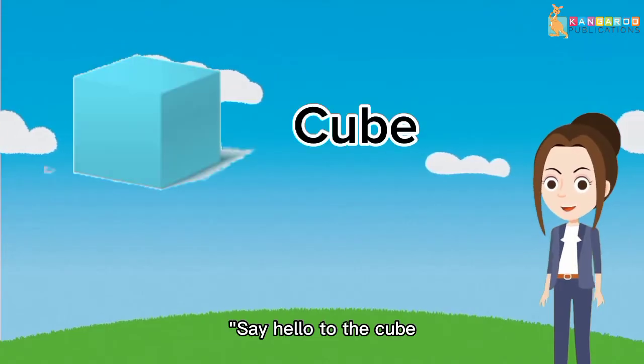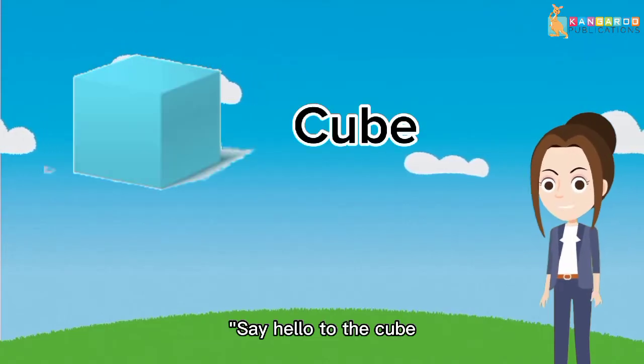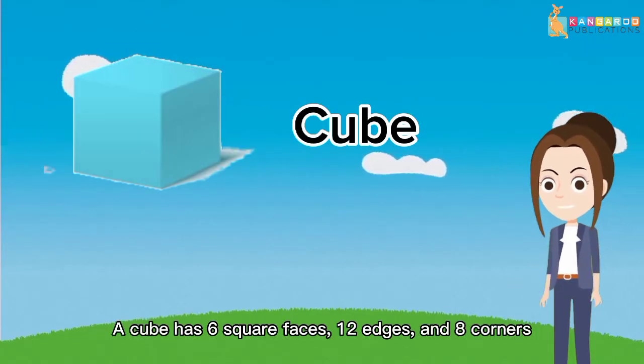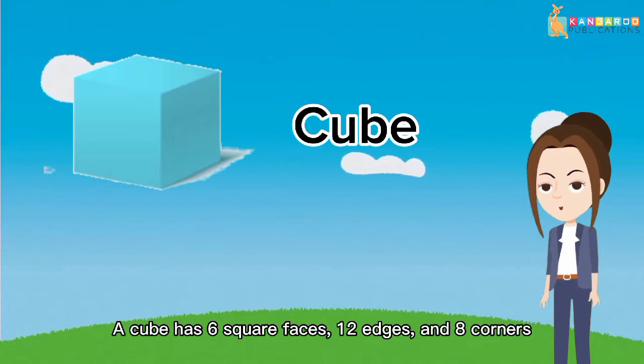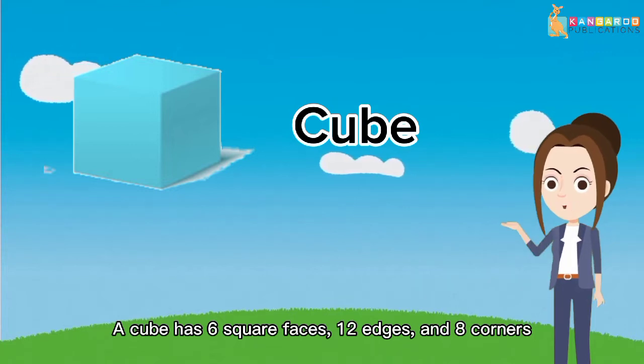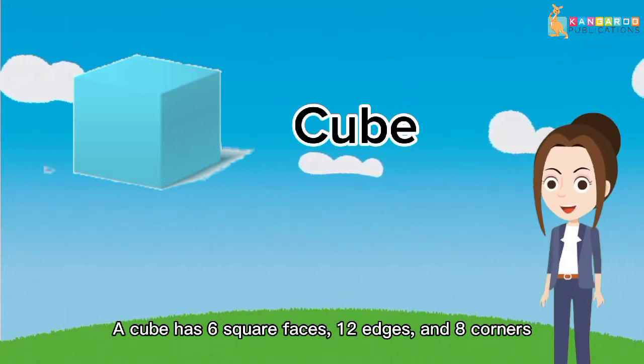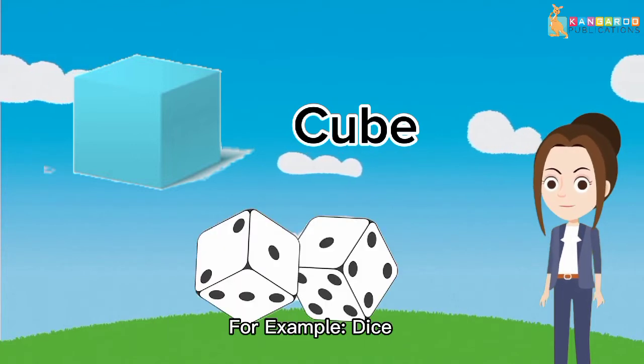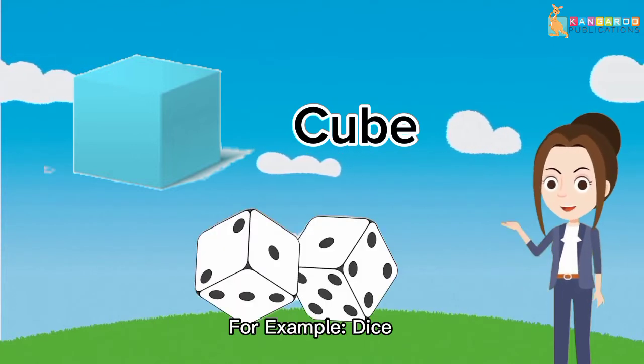Say hello to the cube. A cube has 6 square faces, 12 edges, and 8 corners. For example, dice.